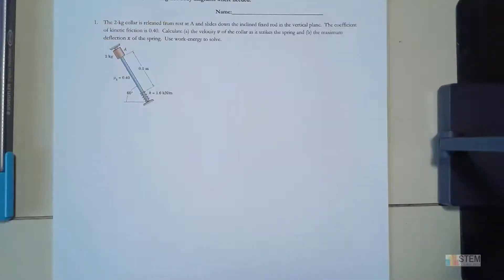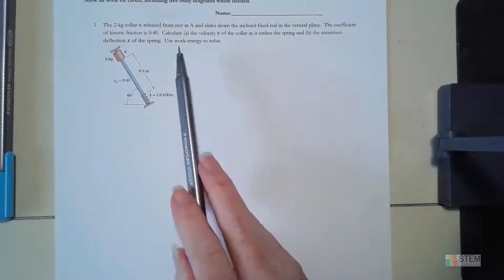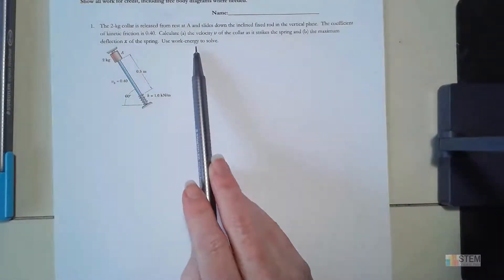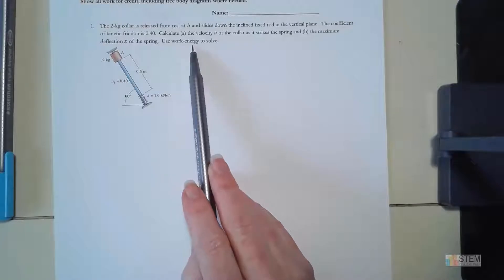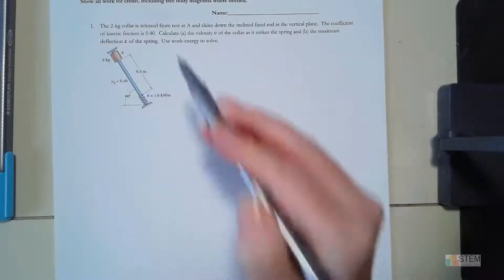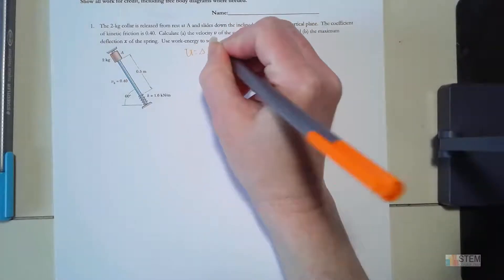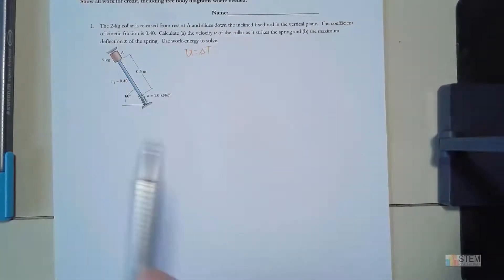Let's go over this problem from exam one. This was the one where we needed to use work-energy. Remember when we did this exam we hadn't covered conservation of energy yet, so the energy equation we're going to use is U equals delta T.